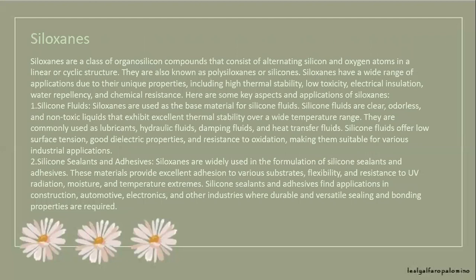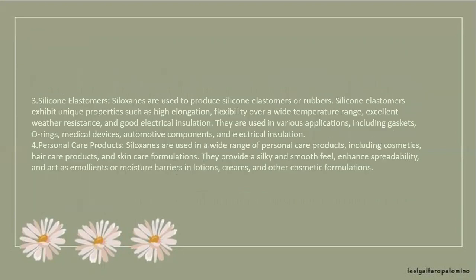Siloxanes are a class of organosilicon compounds that consist of alternating silicon and oxygen atoms in a linear or cyclic structure. They are also known as polysiloxanes or silicones. Siloxanes have a wide range of applications due to their unique properties including high thermal stability, low toxicity, electrical insulation, water repellency, and chemical resistance. Key applications include silicone fluids, silicone sealants and adhesives, silicone elastomers, polymers, and personal care products.